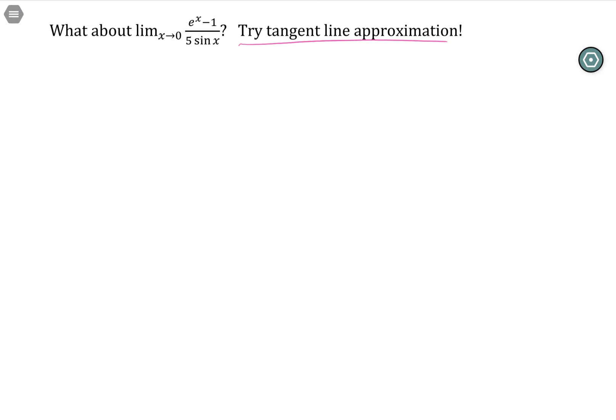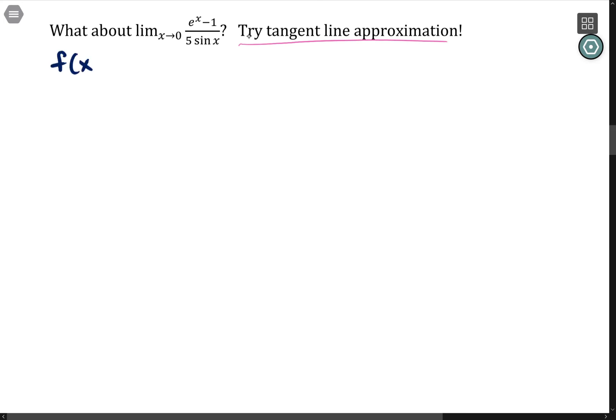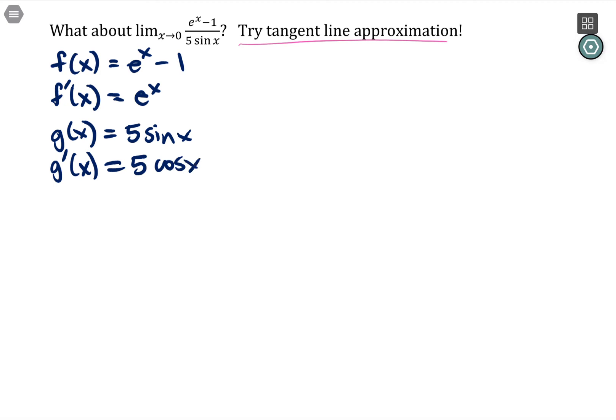So what we're going to do here is find the tangent line, the equation for the tangent line for both of these. So I'm going to say f(x) = e^x - 1, which means f'(x) is just e^x. And then I'm going to split off that g(x) = 5sinx, and g'(x) = 5cosx. And my goal here is to find the equation for the tangent line to each of these.